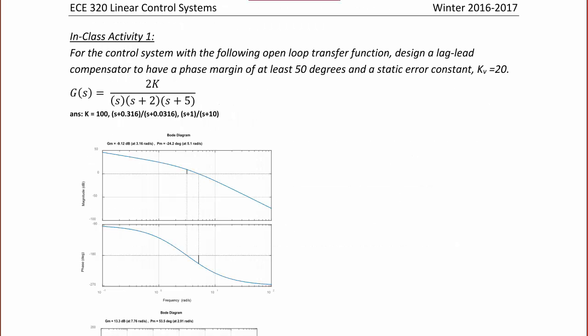In-class activity 1: For the control system with open-loop transfer function G(s) equal to 2K over s times (s+2) times (s+5), design a lag-lead compensator to have a phase margin of at least 50 degrees and a static error constant KV equal to 20. The first step is to use KV to find K. KV equals the limit as s approaches 0 of s*G(s), which equals 2K over 10, set equal to 20. So K equals 100.